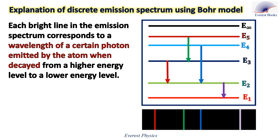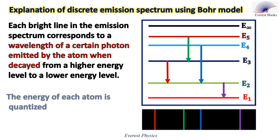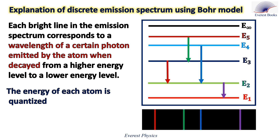Similarly, a transition from E2 to E1 emits another photon of frequency ν₄. The energy of the atom is quantized — only selected values of energy are allowed. Therefore, only selected photons can be emitted by this atom, as shown in the emission spectrum. The emission spectrum is therefore discrete.